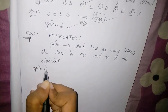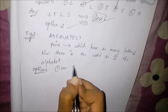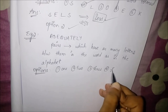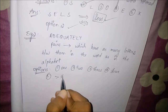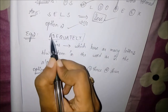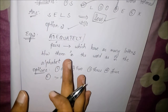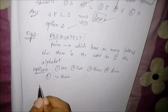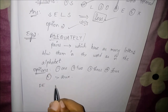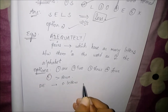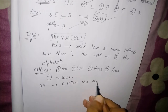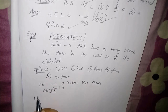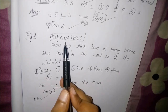Coming to the options: first option is one, second is two, third is three, fourth is four, and fifth is more than four. The given word is 'adequately'. If we consider the pair D and E, the difference between them — the letters in between — is zero. Even in the alphabet, the letters between D and E is zero. So they form a pair.